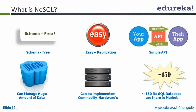There are close to 150 different kinds of NoSQL databases, so it can be difficult to choose which one fits your use case. But there are some categories and concepts to help you choose the right NoSQL database.